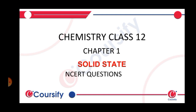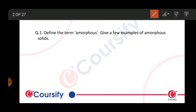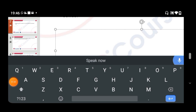The first question: define the term amorphous and give a few examples of amorphous solids. Amorphous means a solid which has no regular pattern — the pattern is not regular and you can't see any pattern. It doesn't have a regular structure or geometry, so it's called an amorphous solid. Examples of amorphous solids include plastics and similar materials.